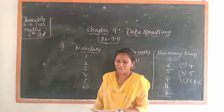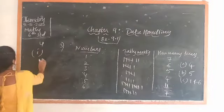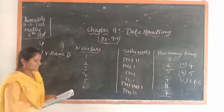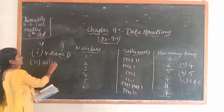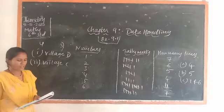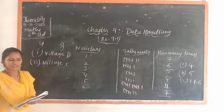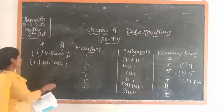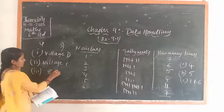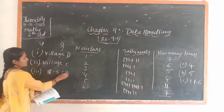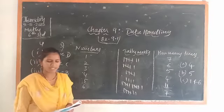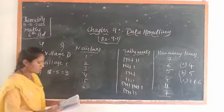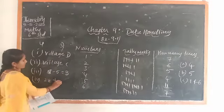Which village has the minimum number of tractors? Looking at the picture, Village D has the minimum with 3 tractors. Which village has the maximum? Village C with 8 tractors. How many more tractors does Village C have compared to Village B? Village C has 8, Village B has 5, so 8 minus 5 equals 3 more tractors. Total tractors in all 5 villages: 6 plus 5 plus 8 plus 3 plus 6 equals 28 tractors.